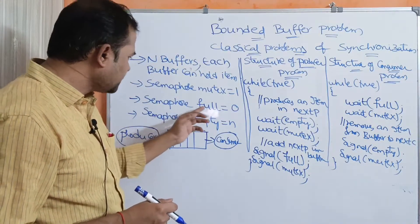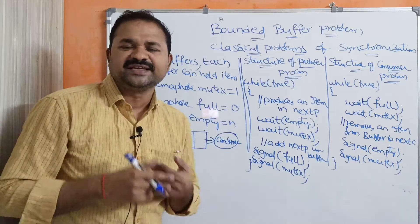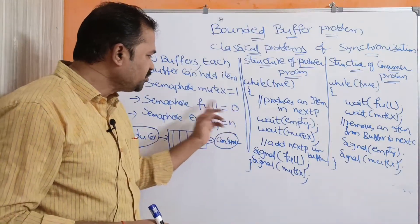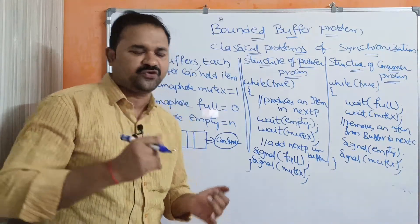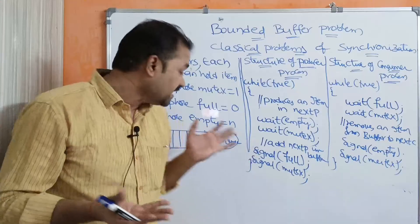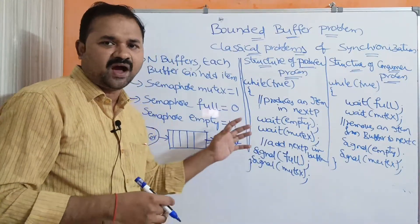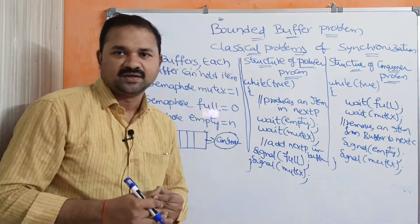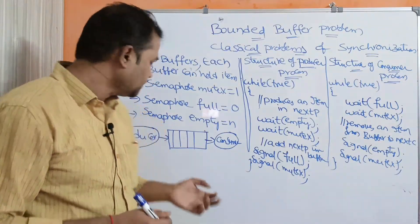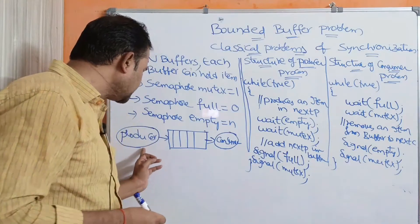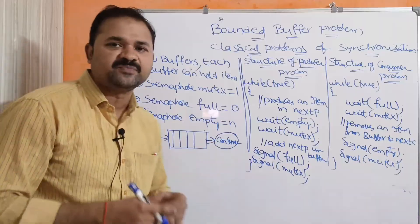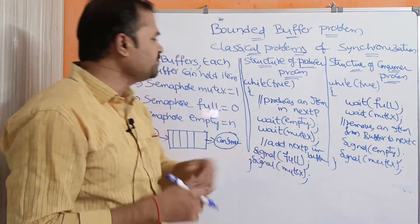The initial value of the semaphore full is 0, because initially all the buffers are not full. The initial value of the empty semaphore is n, because initially all the buffers are empty — we have n buffers, so the initial value of empty is n. So this can also be called the producer-consumer problem. With the help of semaphores, the producer process produces an item and places it in the buffer, while the consumer process consumes an item from the buffer.